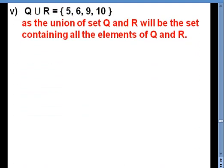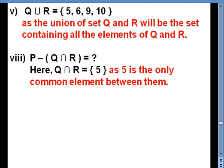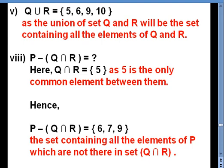In the fifth part, Q union R means all elements of these two sets are taken, so Q union R equals {5, 6, 9, 10}. For the eighth part, P minus (Q intersection R): first we find Q intersection R, which gives {5}. Then P minus {5} gives all elements of P not in {5}, so the result is {6, 7, 9}.